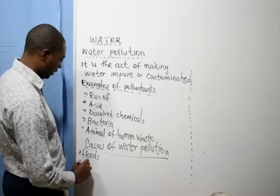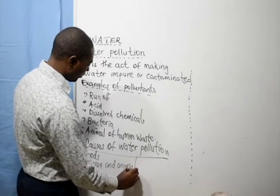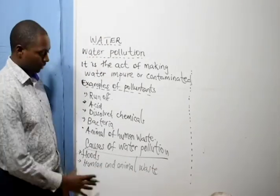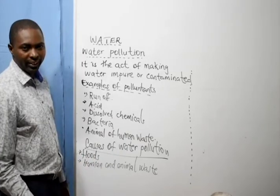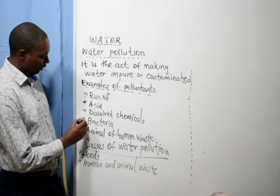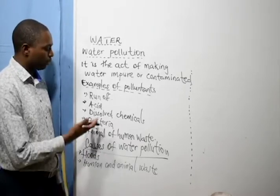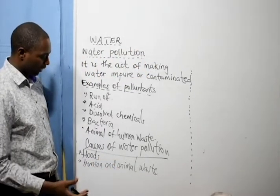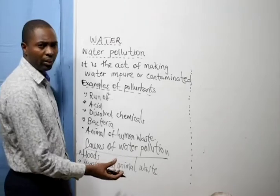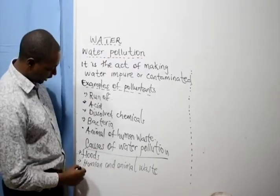Another cause is human and animal waste. Once animals or human beings release their waste in the form of urine, faeces, or dung into a water source, that water gets contaminated with bacteria — waterborne diseases like cholera and bilharzia are released into the water source. Any animal or human being taking water downstream will contract diseases. Animals can also contaminate water with tapeworm eggs, so anyone drinking water downstream will be affected by intestinal worms.